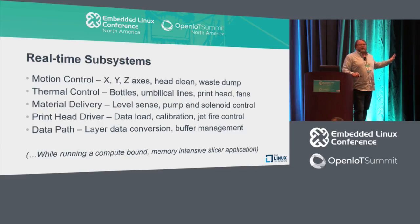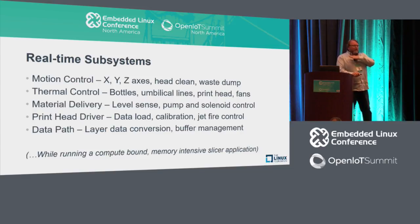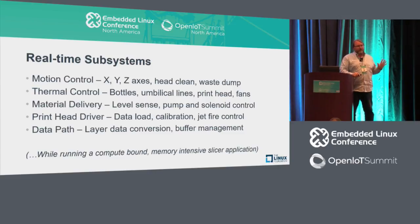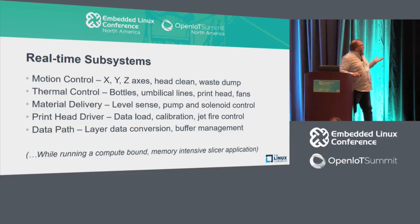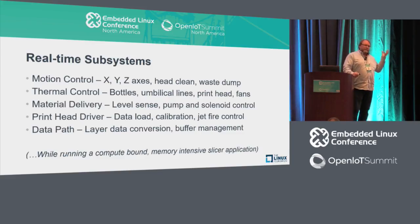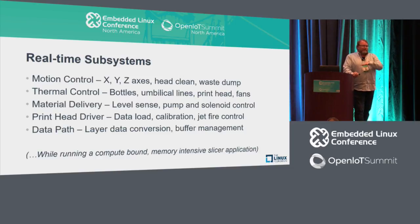While all this real-time work is going on, we're running a slicer that takes a potentially very complex geometric object, slices it geometrically, determines what needs support, and figures out boundaries — all very compute-intensive, using lots of RAM and floating point, pretty much taking over the processor. In our current systems we have a Windows embedded PC running the slicer inside the printer, and a separate 32-bit PowerPC controller running a commercial RTOS for all the real-time systems.